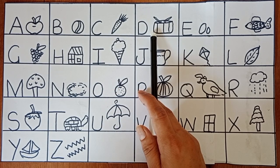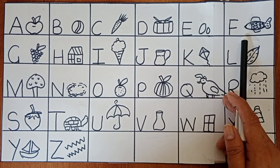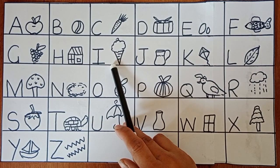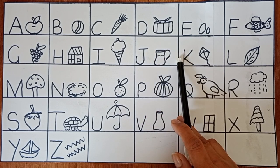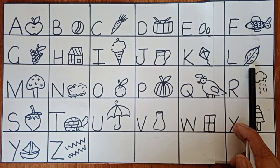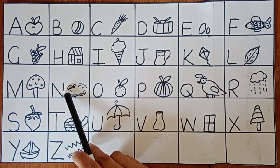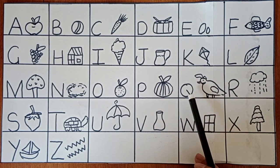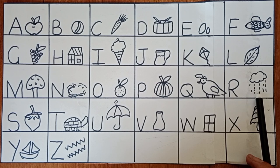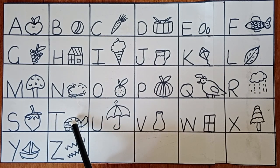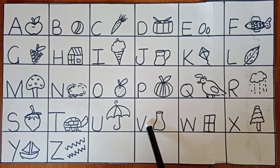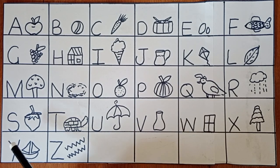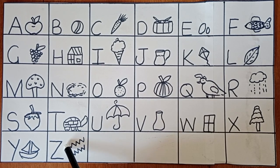C for carrot. D for drum. E for eggs. F for fish. G for grape. H for house. I for ice cream. J, J for jug. C, D, E, F. K for kite. L for leaf. M for mushroom. N for nest. O for orange. P for pumpkin. Now I know my ABCs. Next time won't you sing with me. Q for quail. R for rain. S for strawberry. T for turtle. U for umbrella. V for waist. W for window. X for xylophone. Y for yacht. Z for zigzag.